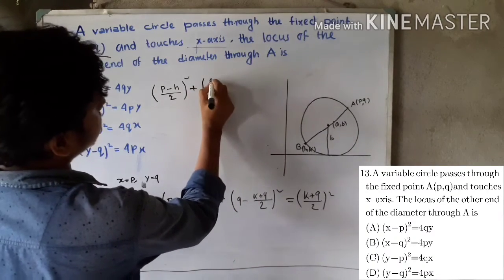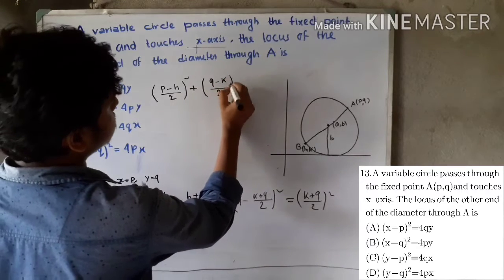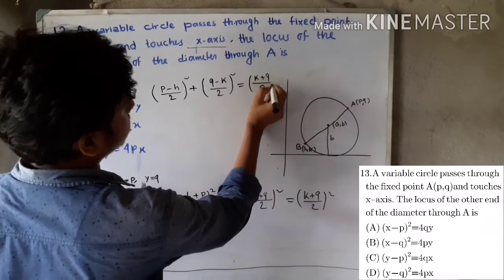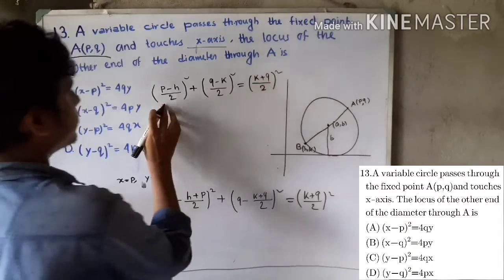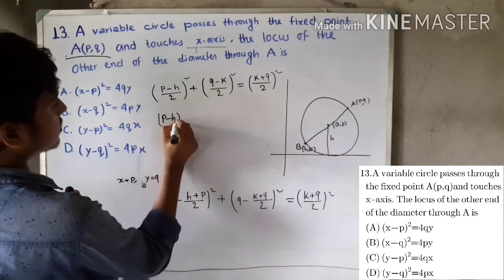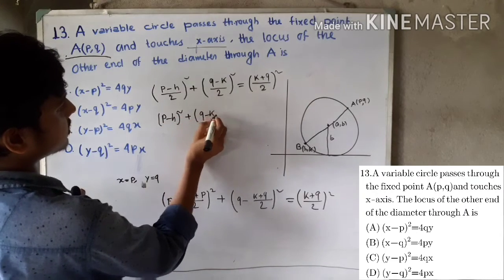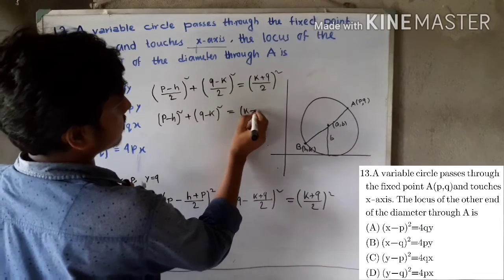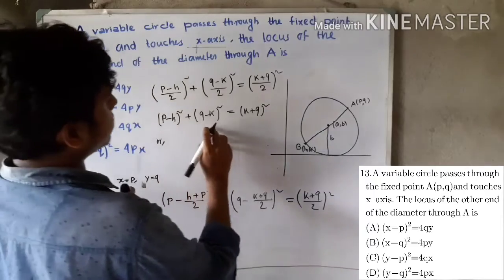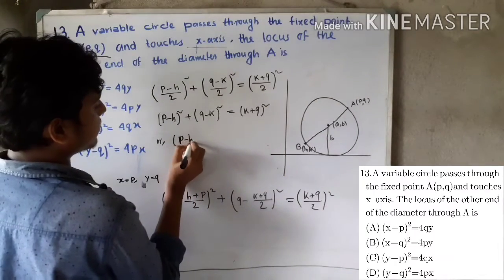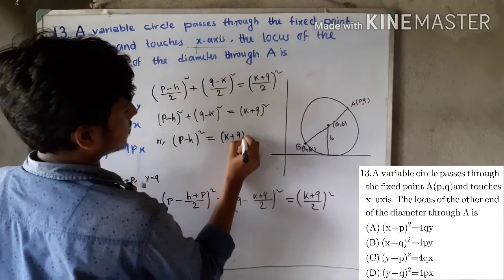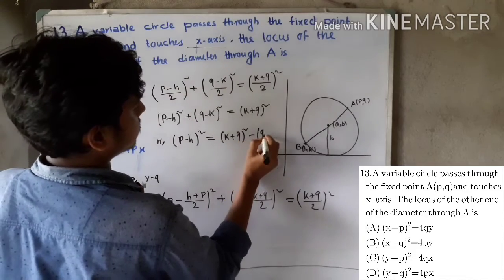So (q minus k) by 2 whole square equals (k plus q) by 2 whole square. Cancelling the whole square and simplifying further: (p minus h) by 2 whole square equals (k plus q minus k) whole square, which simplifies to p minus h whole square equals 4kq.